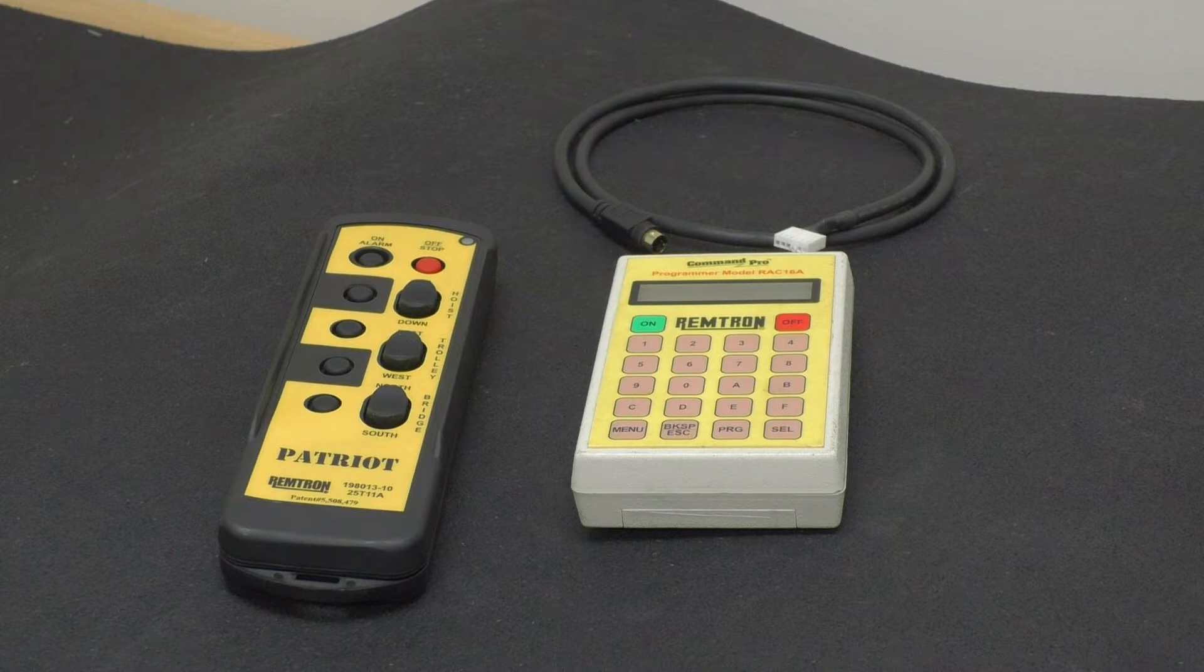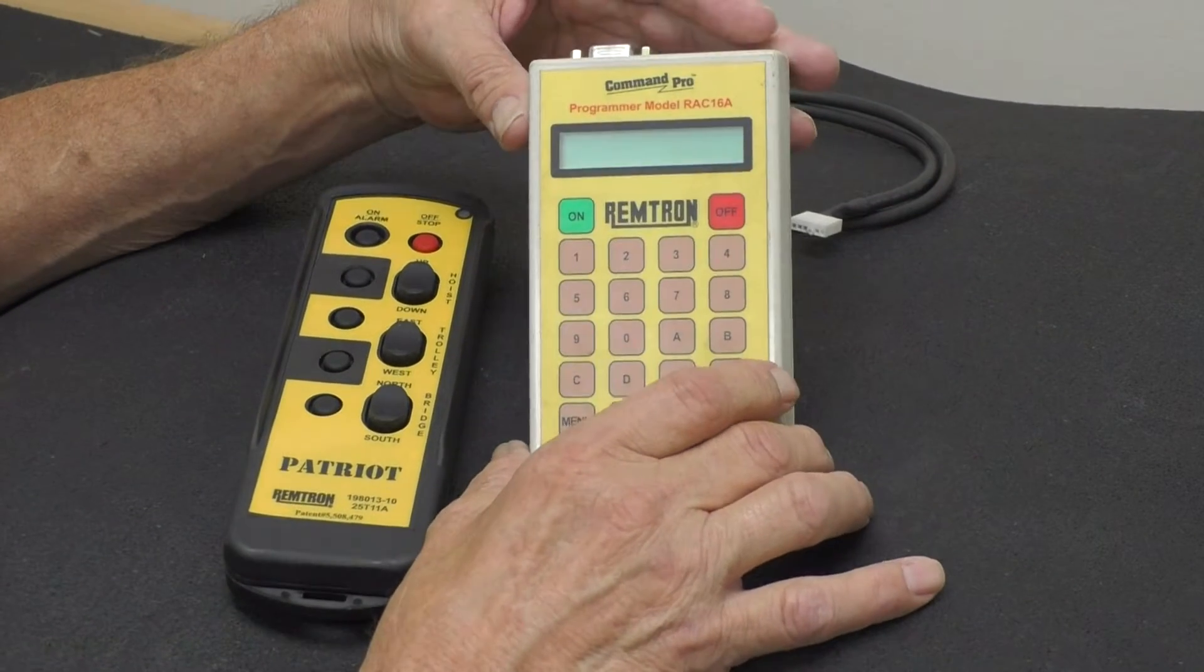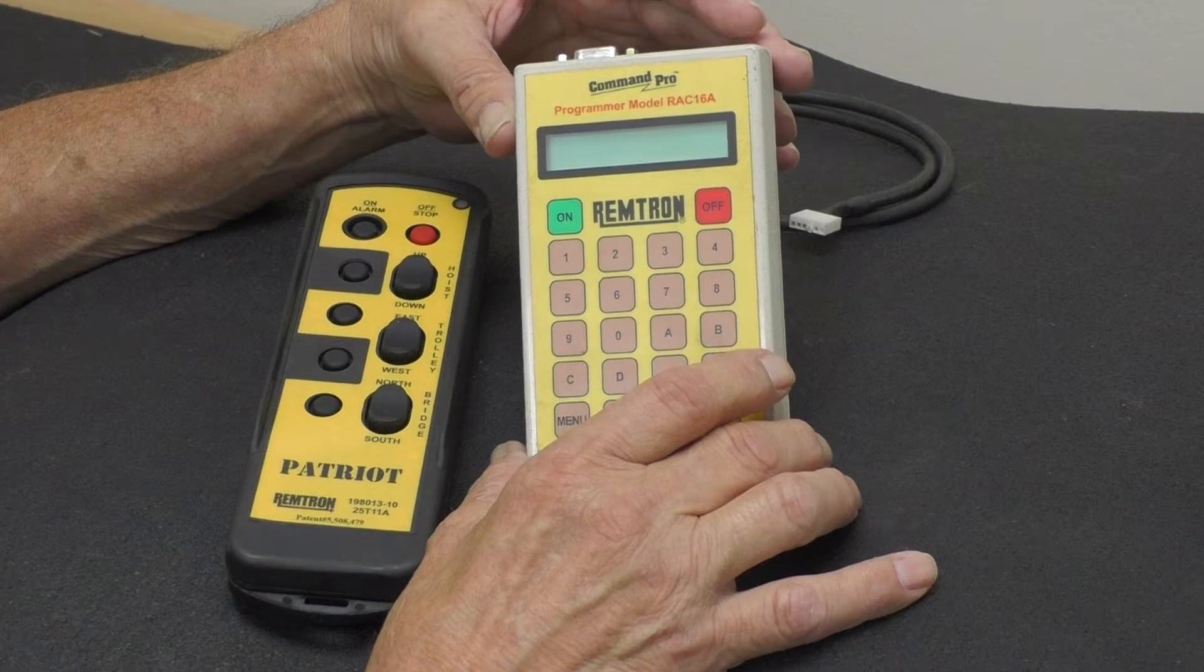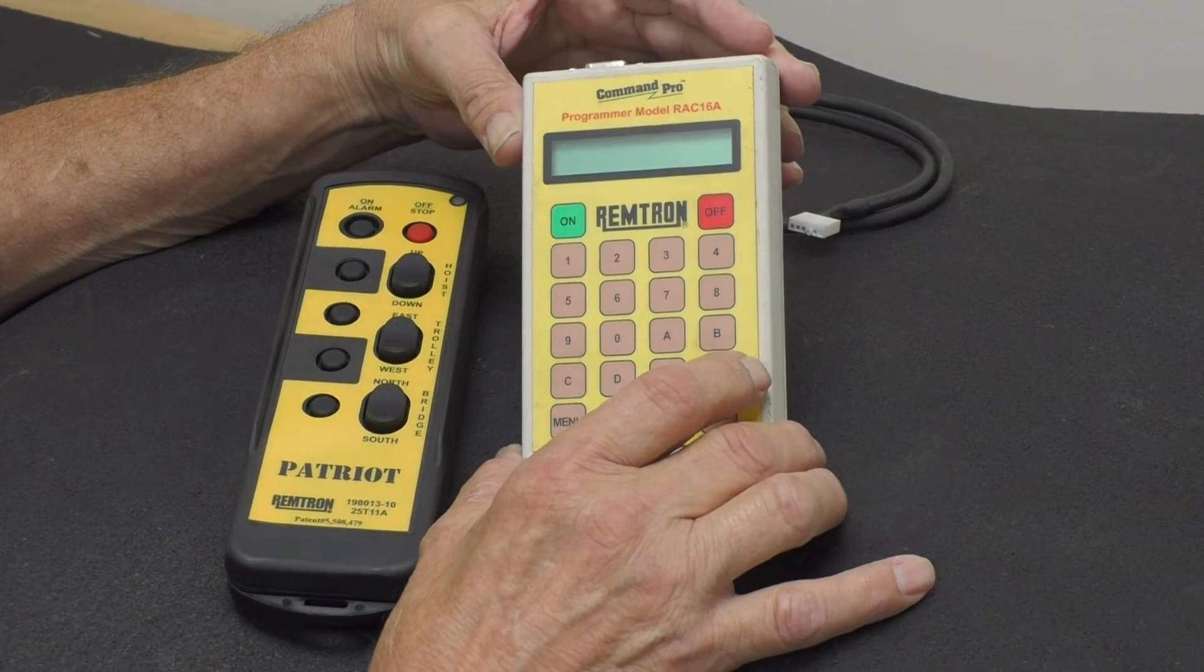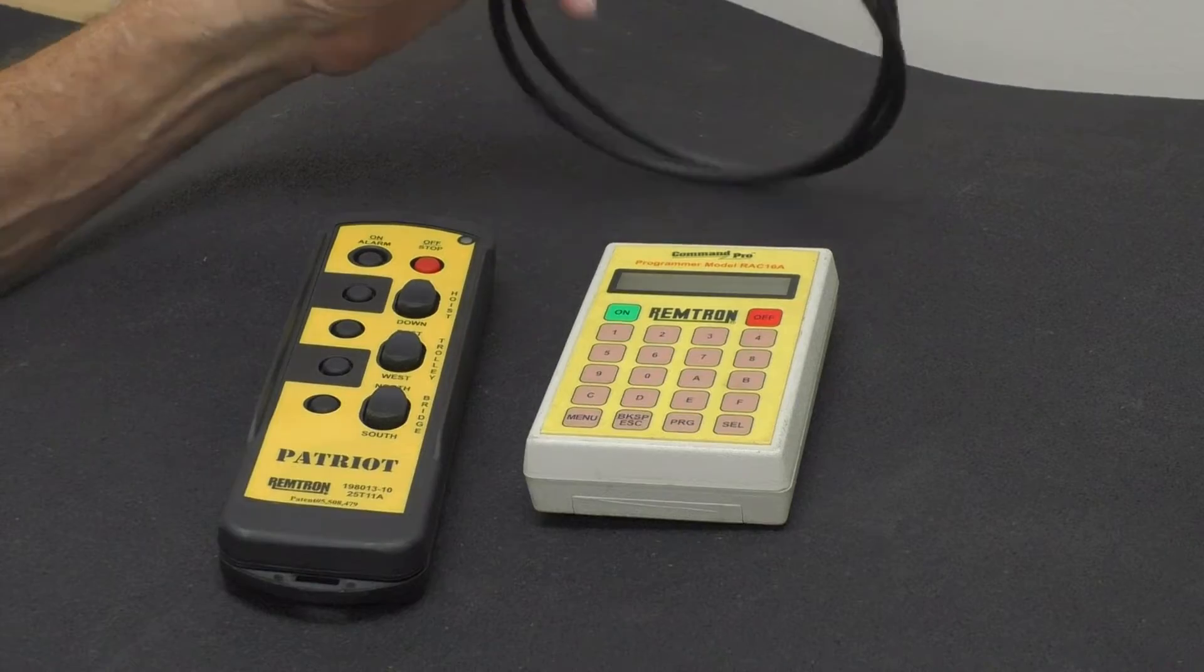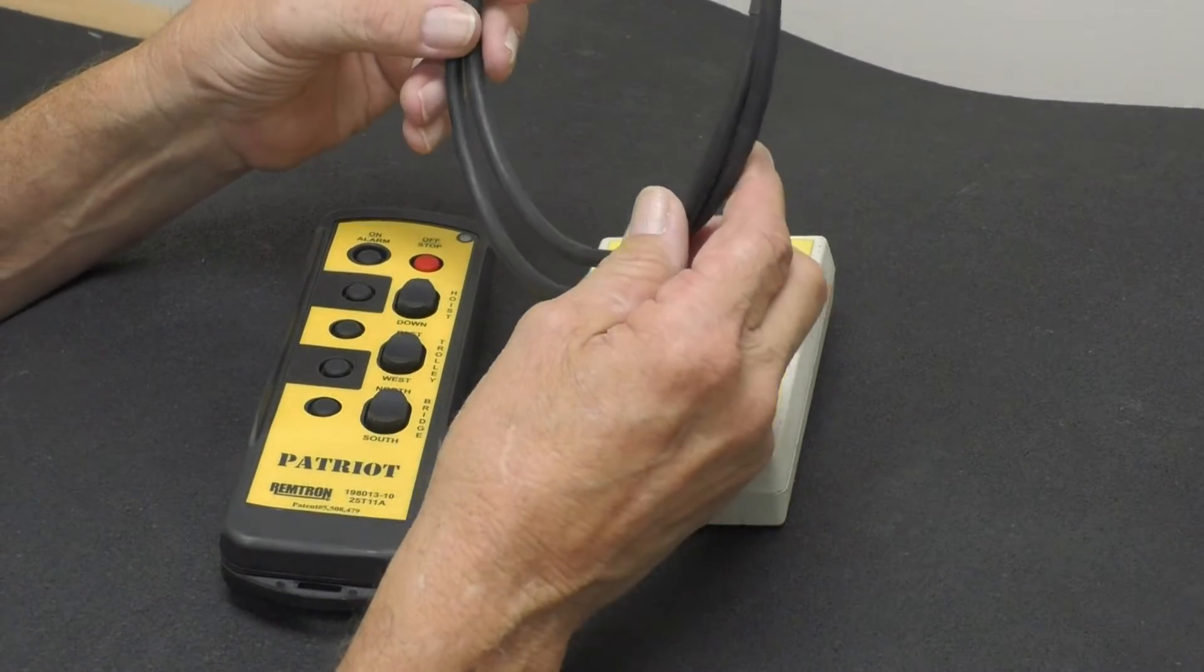A couple things you're going to need. First of all, we're going to need a RAC16 programmer to program the transmitter along with a RAC16 cable.